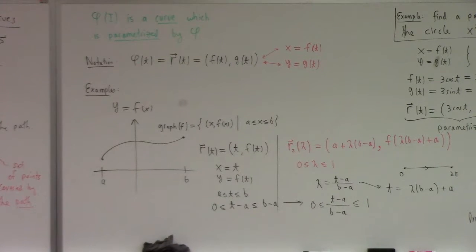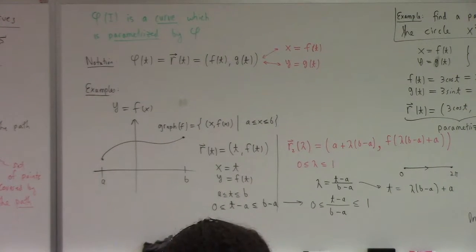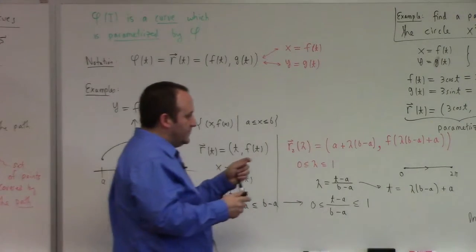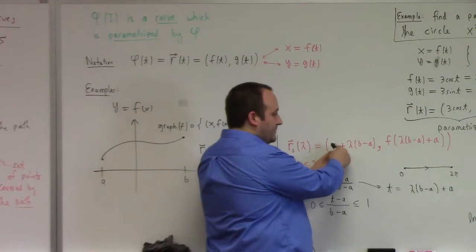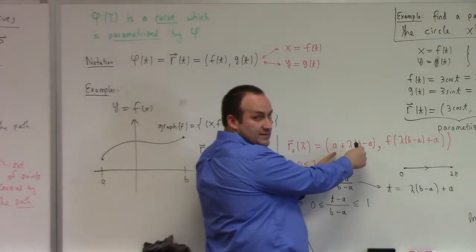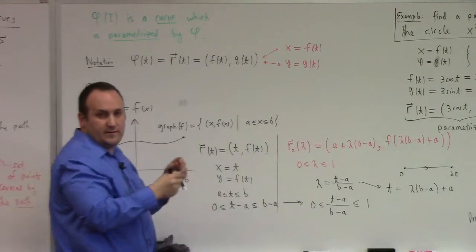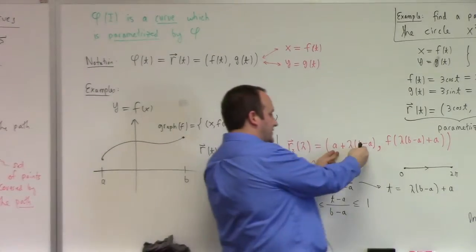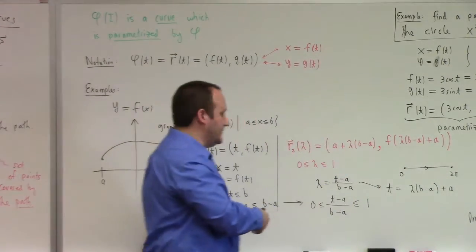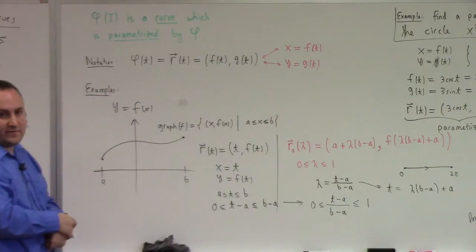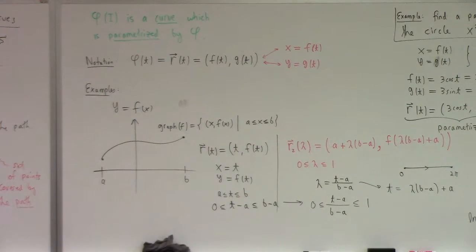That rescales the parameter of the graph. It rescales the parameter such that it starts at 0, it ends at 1. And as lambda ranges from 0 to 1, what happens is this ranges from a all the way to b, and so does this. And they track. When there's x here, there's x here. So that's exactly what you need to be on the graph. This is a parameterization of the graph based on the parameter going from 0 to 1.